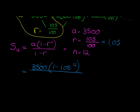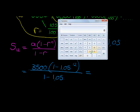And let's see what answer do we get. So taking my calculator: 1 minus 1.05 to the power of 12, times 3,500, is equal to, divided by, and in brackets, 1 minus 1.05, close my brackets.